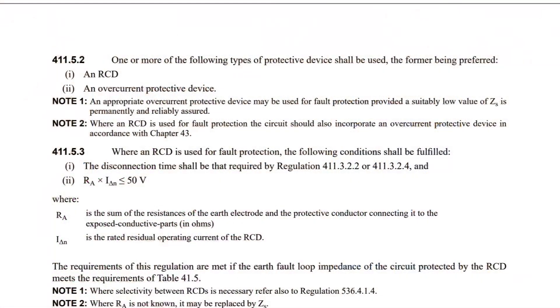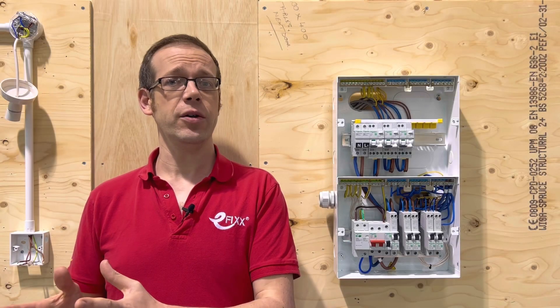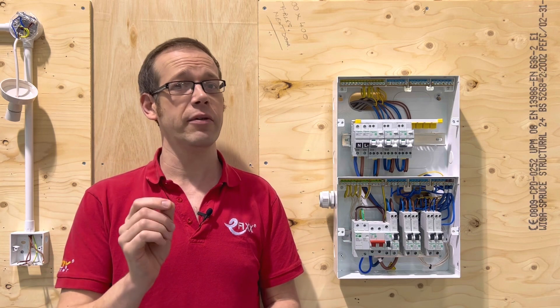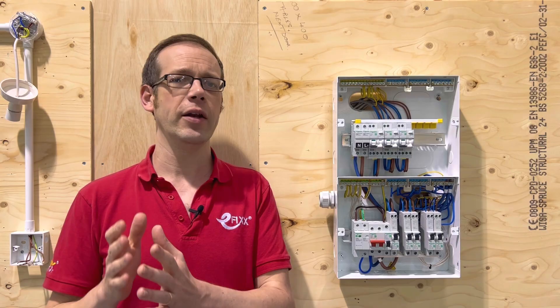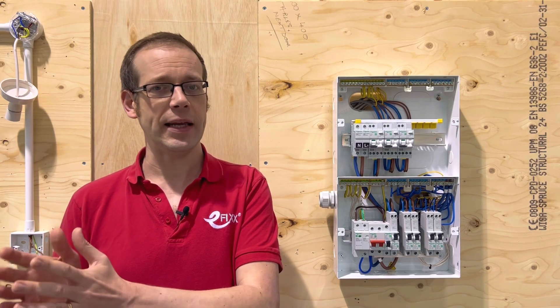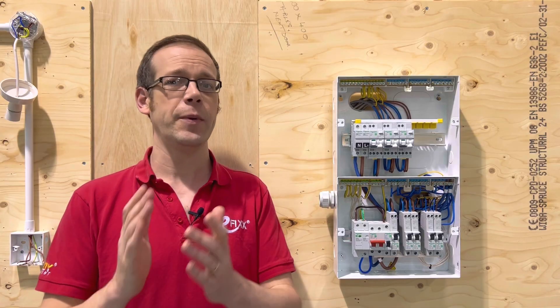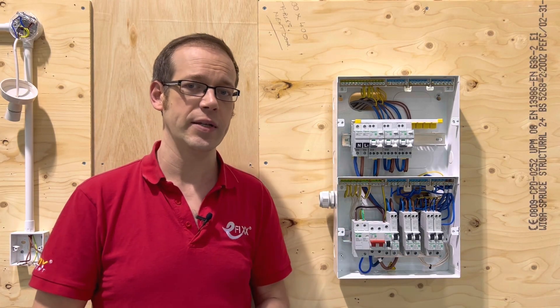It's worth noting regulation 411.5.2 which states for a TT system one or more of the following types of protective device shall be used, the former being preferred. Number one an RCD, number two an overcurrent protective device. So according to indent 2 you can get away with using an MCB as long as you meet the requirement in note 1 which says an appropriate overcurrent protective device may be used for fault protection provided a suitably low value of Zs is permanently and reliably assured. In practice it's very hard in a TT arrangement to get a low enough value of Zs to let you use an MCB and so RCDs are usually the way to go especially as they're likely to be required for additional protection as well.